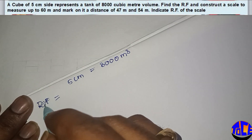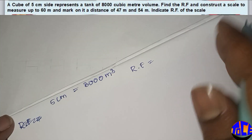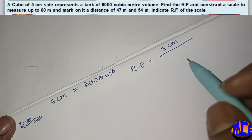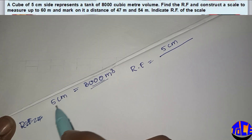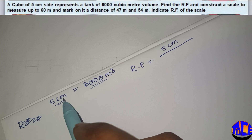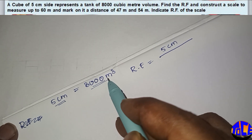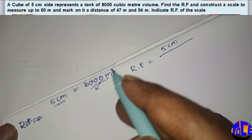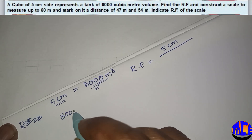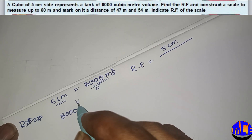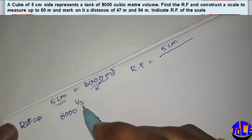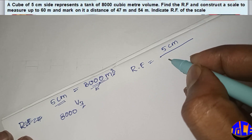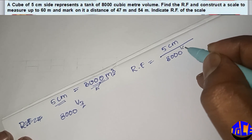For calculating RF, 5 centimeter will be in the numerator and 8000 meter cube will be in the denominator, but this denominator is in three dimensions and the numerator is in one dimension. So we need to convert this three-dimensional quantity into one dimension. We can do that by taking 8000 to the power of one by three.